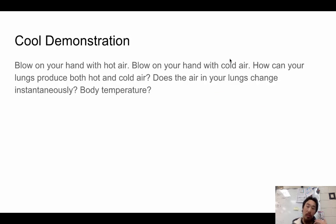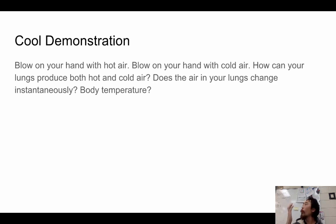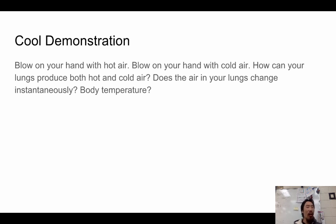Here's a cool demonstration: blow on your hand with hot air, then blow with cold air. Ask yourself — how can your lungs produce both hot and cold air? Does one lung have hotter air? Is the hot air from the side where the heart is, because of constant motion and kinetic energy? Or does the air change instantaneously? Think about it.